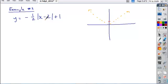Our horizontal shift, what value of x would give us a zero inside the absolute value expression? Two, so that gets shifted over.